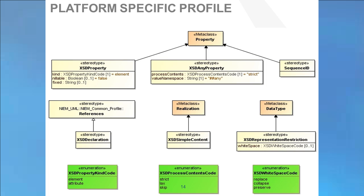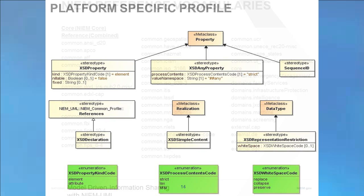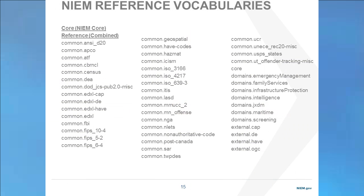The NiemUML-specific PSM profile includes stereotypes intended to mark a model to make XML-specific commitments — deciding how that model will map to or has mapped from XML. For example, whether elements or attributes are used, how white space is handled, how declarations are handled between namespaces, and the handling of any properties. The NiemUML specification also includes all of the Niem reference namespaces, including NiemCore, which is used throughout all domains, all namespaces included by NiemCore, and specific Niem domains such as Emergency Management, Family Services, and Maritime.